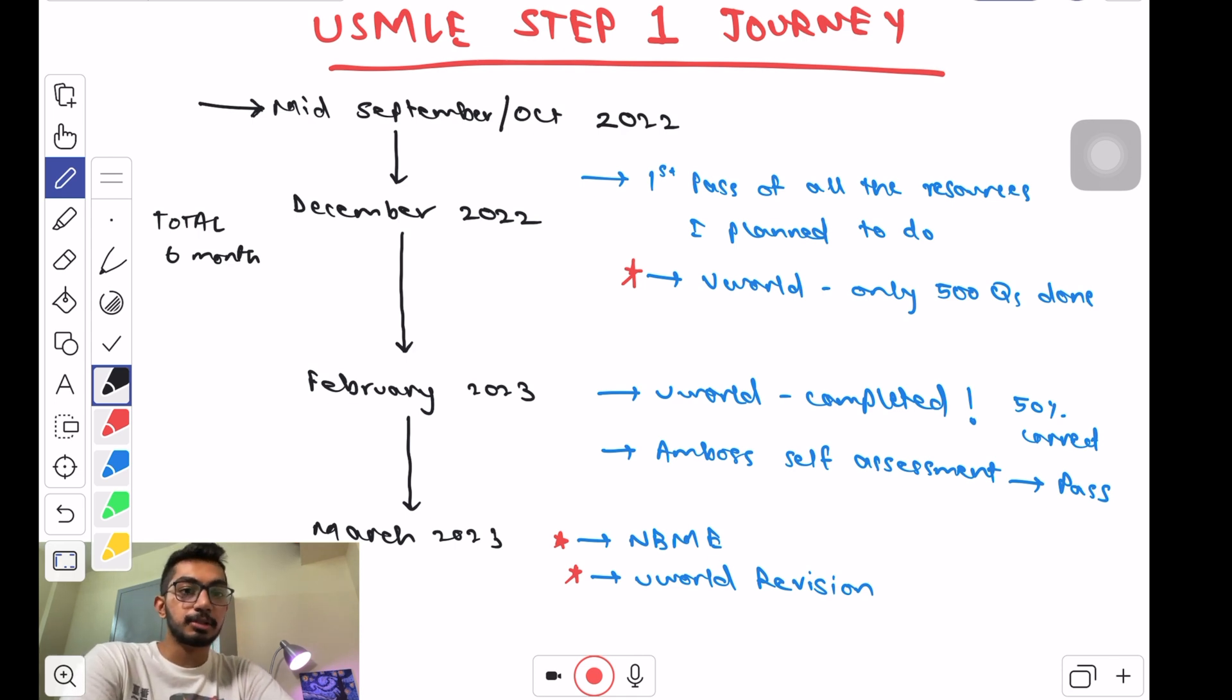From December to February 2023, I decided to finish UWorld completely and I was able to do 50% of them correctly. I also gave the AMBOSS self-assessment test and I passed it. It was a different experience because I had to sit for an exam for over four or five hours, and I was sitting to do my UWorld questions only for one hour each section and then do another hour in the evening.